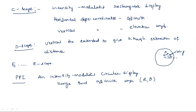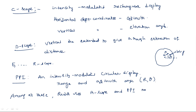In radar systems, the most commonly used displays among all these types are the A-scope display and the PPI display, used most frequently compared to all the remaining displays. This concludes the concept and types of radar displays.